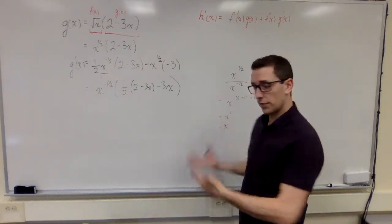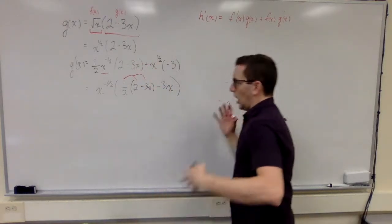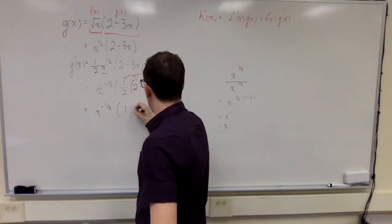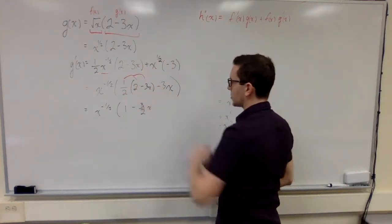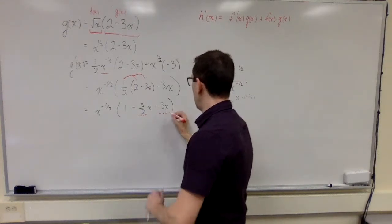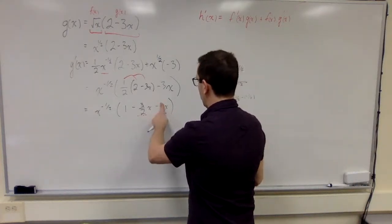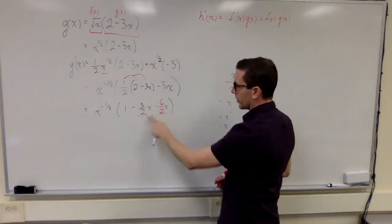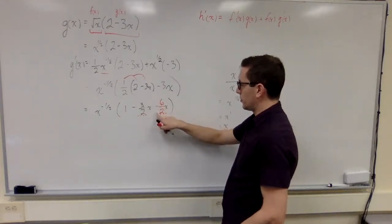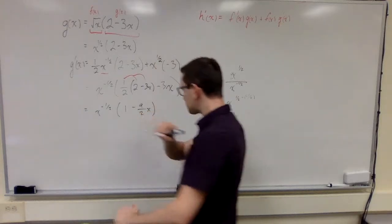At this point this is an acceptable form for the derivative, but I'm going to do more simplification. All I need to do is use the distributive property and collect like terms. Distributing the one half into the brackets gives one minus three over two x, then subtracting the three x term. Collecting like terms — I need a common denominator since I'm working with fractions. Three can be written as six over two, so negative three over two x minus six over two x gives negative nine over two x.